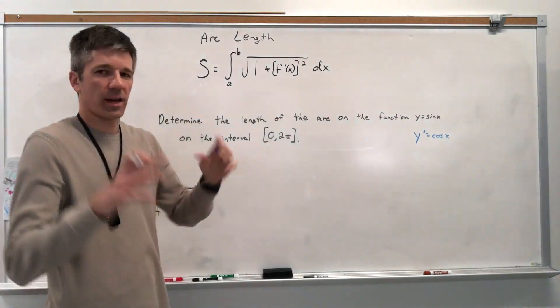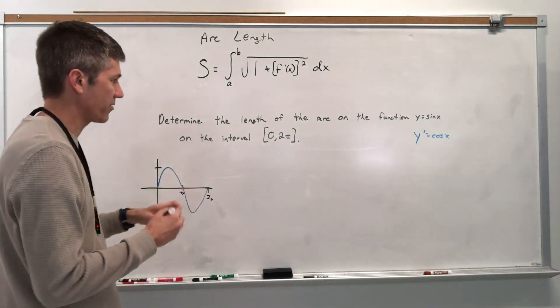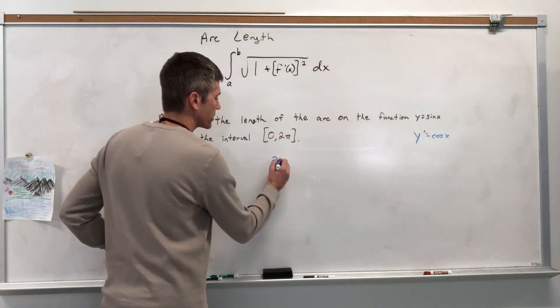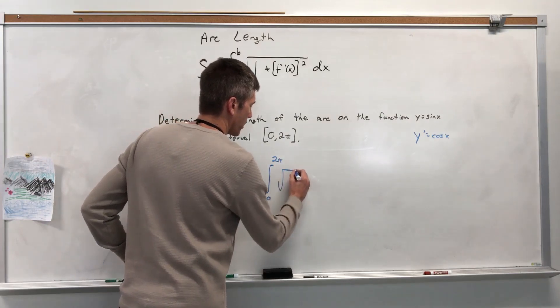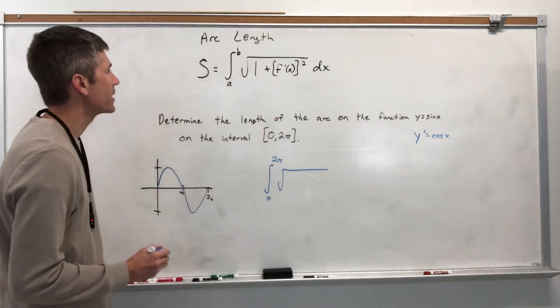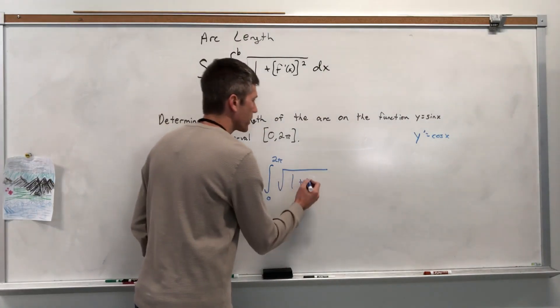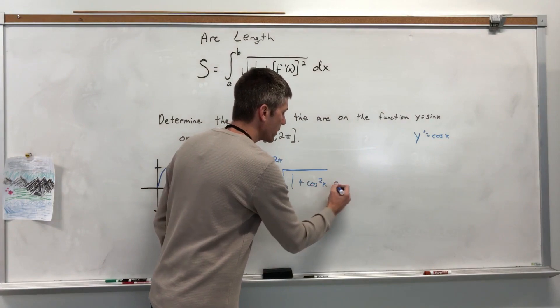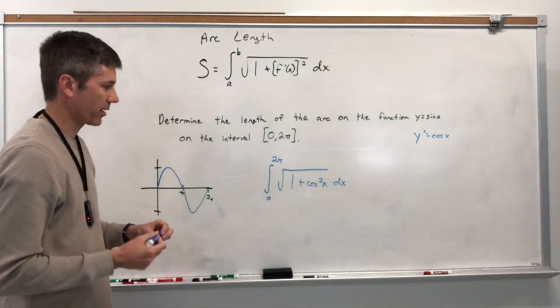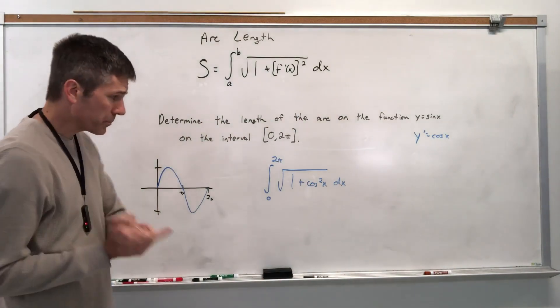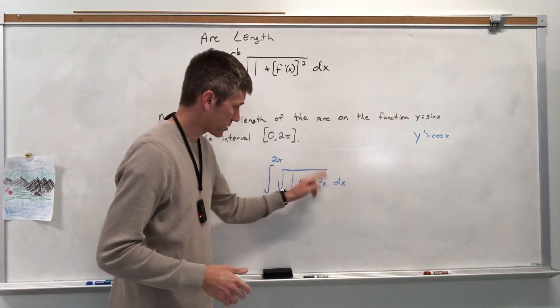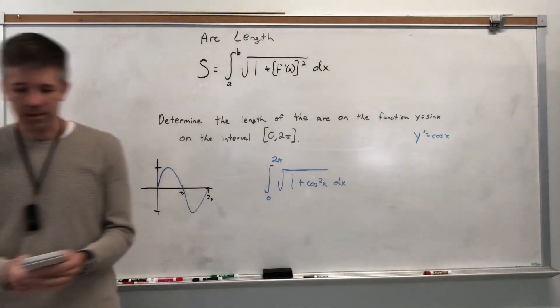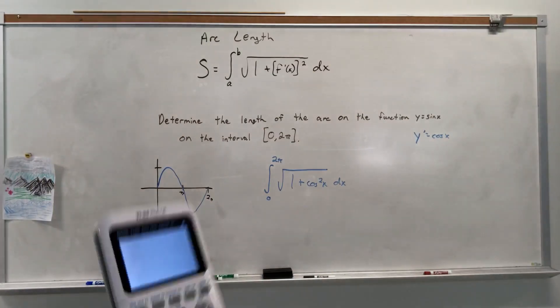I put that in brackets just to show that I'm squaring something larger. 0 to 2 pi, of square root 1 plus the derivative, cosine, squared. So cosine squared. There are a lot of them you can do by hand. This one you can't. I'm sorry, I tried. It doesn't work. And by the way, if you're thinking, well, just square the 1 and square root the 1 and square root the cosine, no, they're added. You can't do that. So I'm going to grab my calculator and I'm going to type it in.